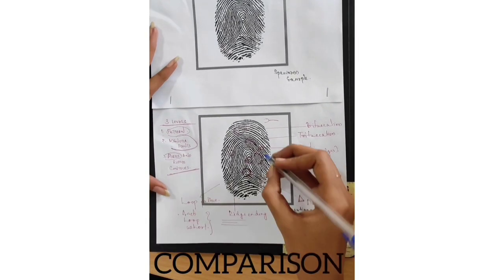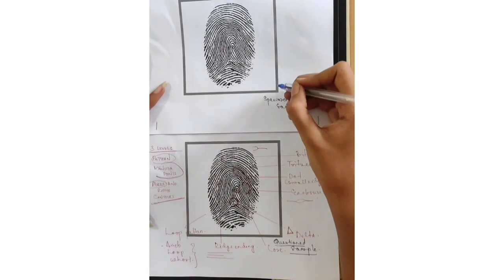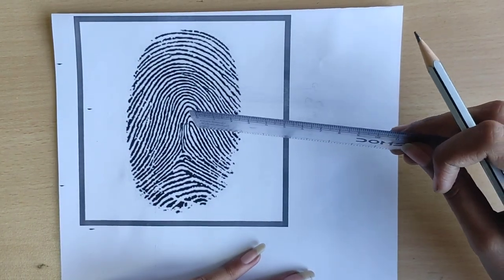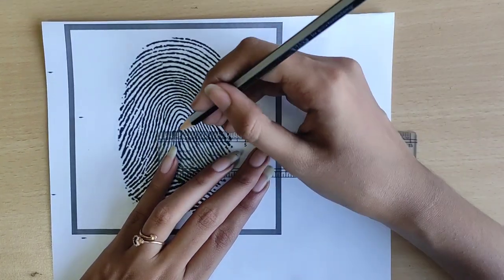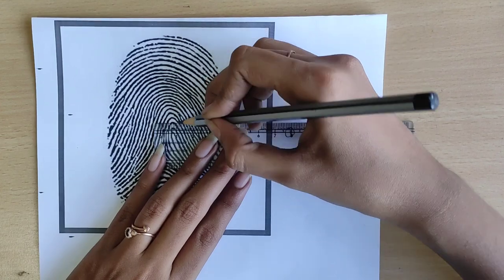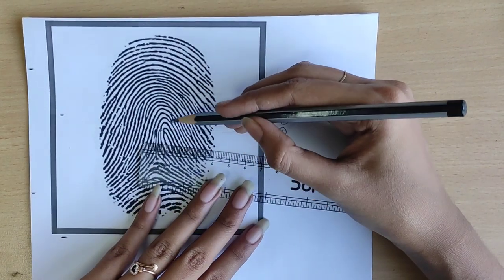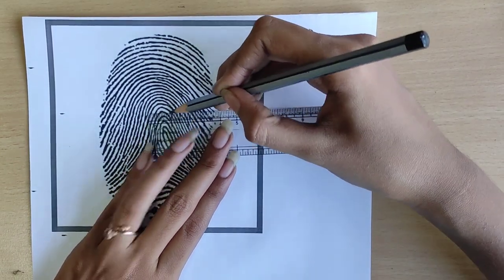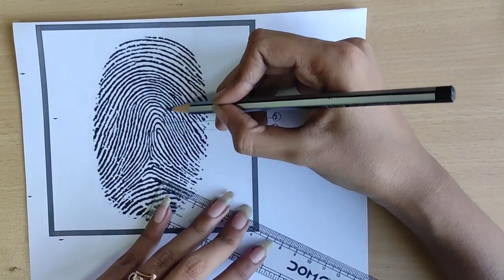I am taking this pattern as the questioned sample for the comparison, and the above pattern is taken as the specimen sample for the comparison. For the comparison, we should mark the points of identification. This is point one — point one is bifurcation. Next is point number two — point number two is bifurcation, which is above and towards the right side of point number one with no ridges intervening. Then point number three — point number three is bifurcation.